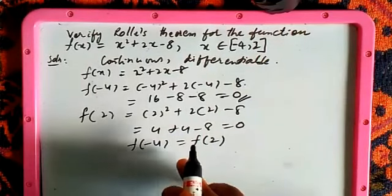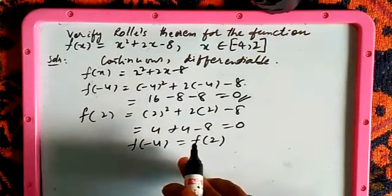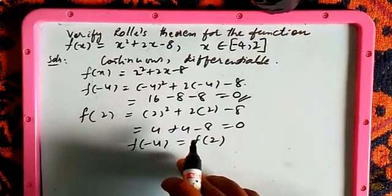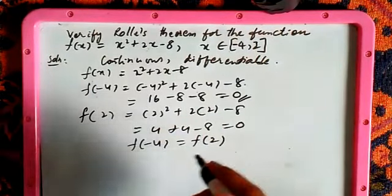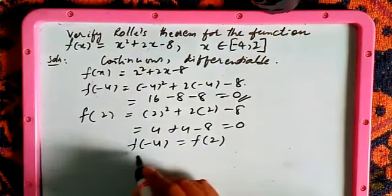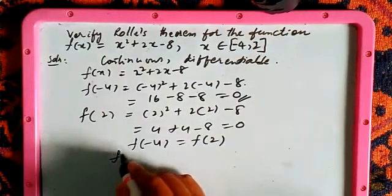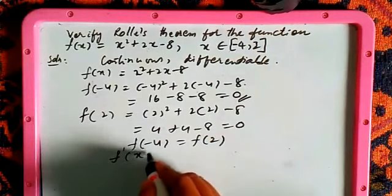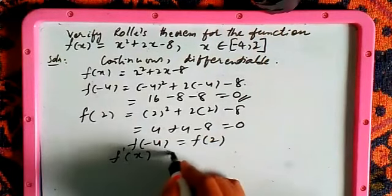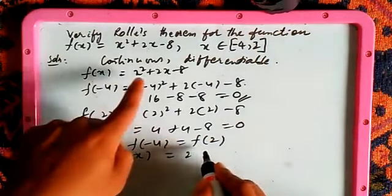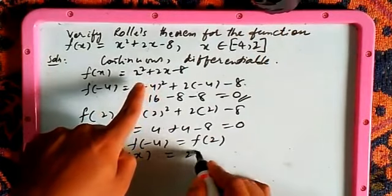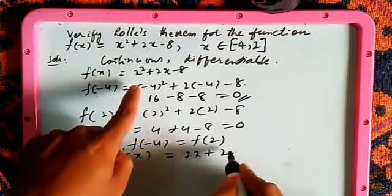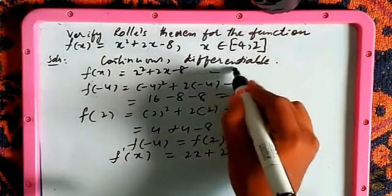The next condition for Rolle's theorem is that f(a) = f(b). Since this is satisfied, we proceed to differentiate the equation: f'(x) = 2x + 2.